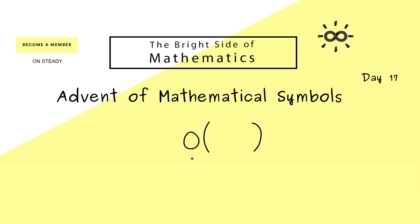If you know the big o notation you will not be surprised that we also find parenthesis next to the little o, and also a function inside. So this is little o of g of x.